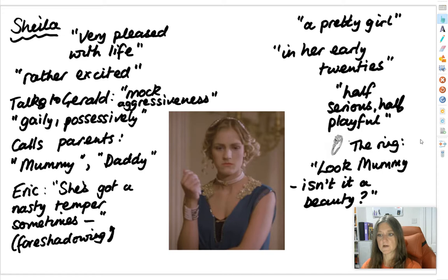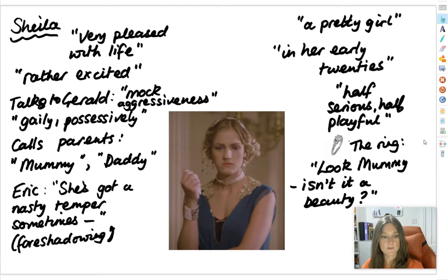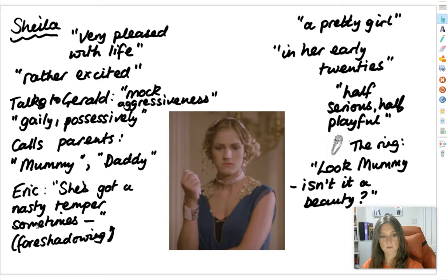When she is given her engagement ring, she gets really excited. She says, look, mummy, isn't it a beauty? — which sounds quite childish, almost like she's opening her favourite Christmas present. And then quite tellingly, Eric warns Gerald in a bit of sibling banter: she's got a nasty temper sometimes. As the play goes on, bear this quotation in mind, because J.B. Priestley is using the technique of foreshadowing here — giving us a clue in the script to something that's going to happen later in the play.